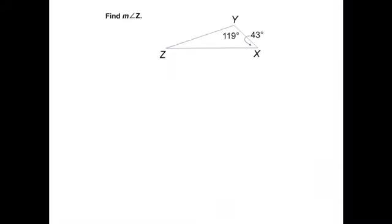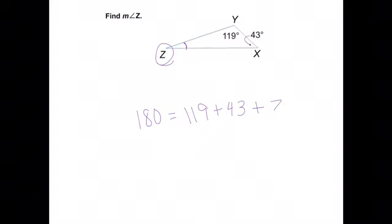So on this one, it says find the measure of angle Z. Angle Z is right here, so that's that small measure there. Now I know that I have 180 degrees total in my triangle. And so to do that I have 119 plus 43 plus my Z.